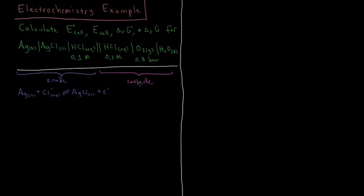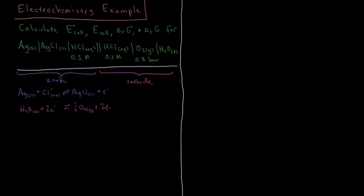At our cathode, we have water being reduced with two electrons in order to form O₂ gas and H⁺ ions. So we have liquid H₂O plus two electrons yielding one half equivalent of O₂ gas plus two aqueous H⁺ ions in solution.